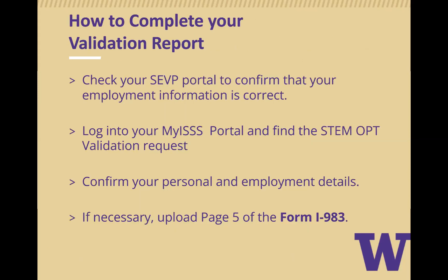Here are steps to completing your validation report. First, check your SEVP portal to confirm your employment information is correct. Next, log into your MyISS and find the STEM OPT validation request. You will confirm your personal and employment details. If necessary, you will also upload page 5 of your I-983 form. This is required for your 12 and 24 months on STEM OPT Extension.